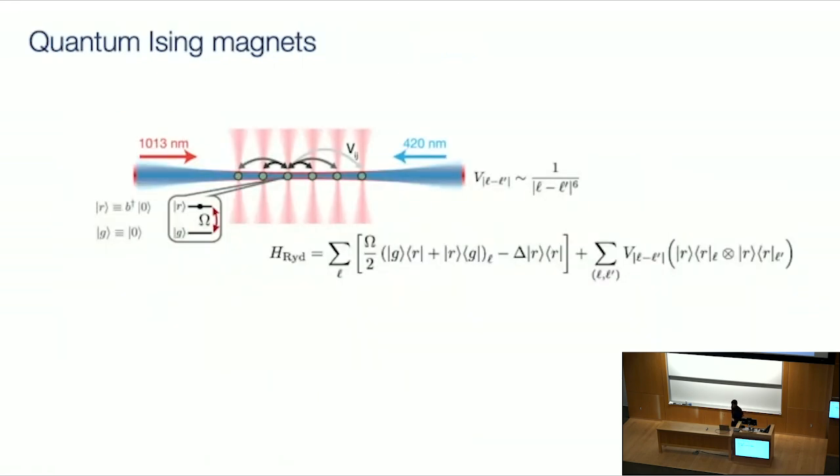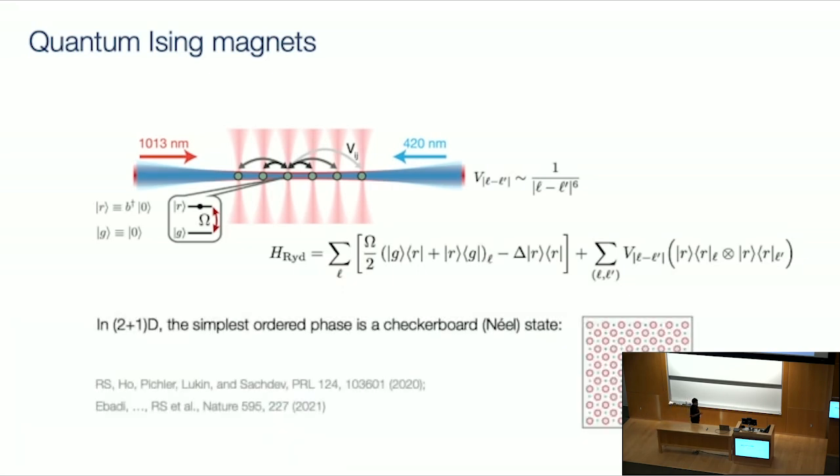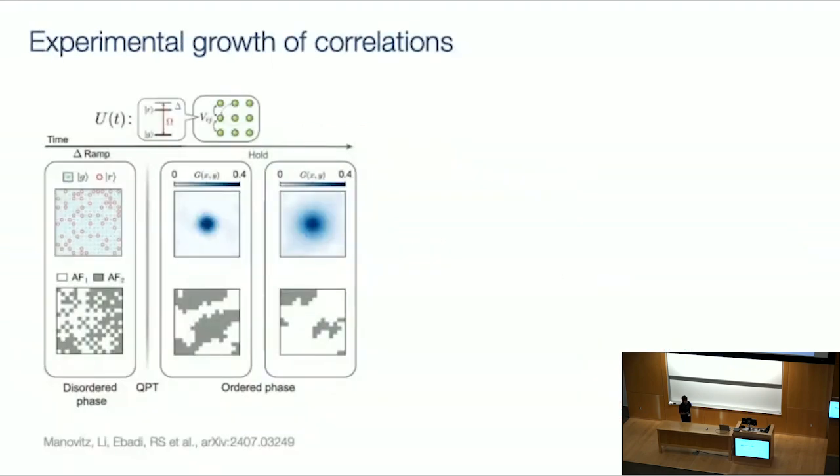So the many-body Hamiltonian looks something like this. So we have omega, which is a Rabi frequency that drives between the ground and the Rydberg state. You can think of it as a transverse field. We have delta, which is the laser detuning, and you can think of this as the chemical potential for the Rydberg state. And then, of course, you have the important Rydberg-Rydberg interactions. And it's not difficult to see that if I'm working in two dimensions, say I'm working on the square lattice, the simplest possible state, the simplest possible ordered state that I can write down consistent with the Rydberg blockade is this Neel ordered state or the checkerboard state.